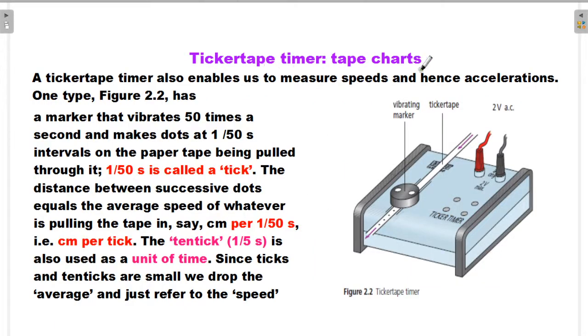A ticker tape timer enables us to measure speed and hence acceleration. A tape timer has a marker that vibrates 50 times a second. This vibrating marker makes dots at 1/50 second intervals on the paper tape being pulled through it.